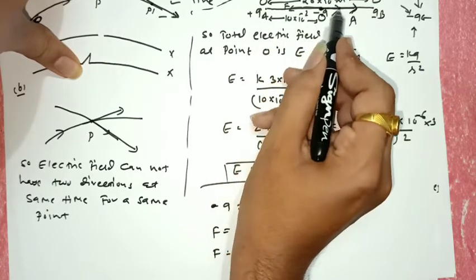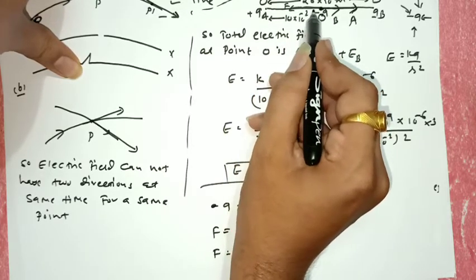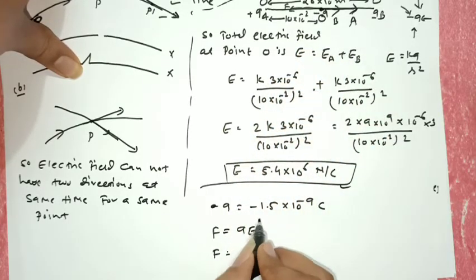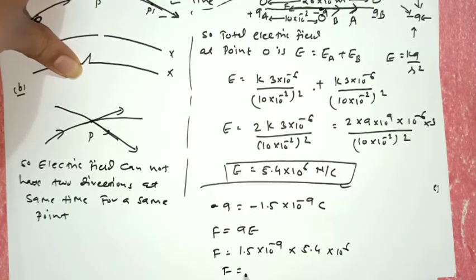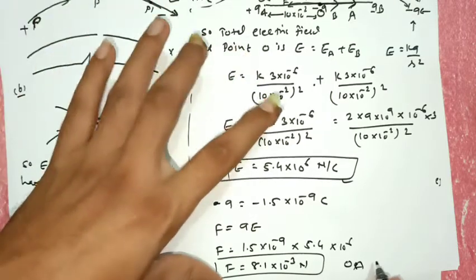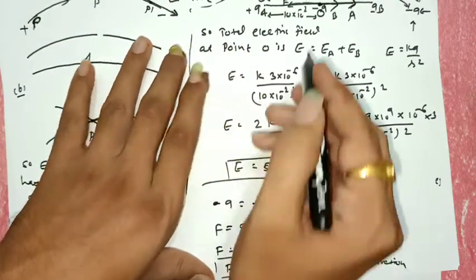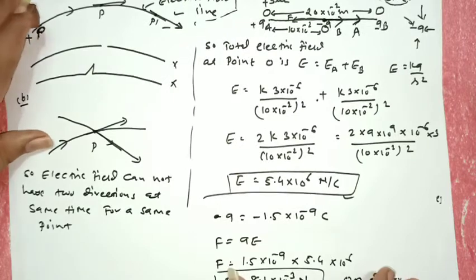Since the charge is negative, we have already considered the direction - force is opposite to the electric field. So F = 1.5 × 10⁻⁹ × 5.4 × 10⁶ = 8.1 × 10⁻³ newton. The direction of the force is along OA direction, i.e., from O toward A.